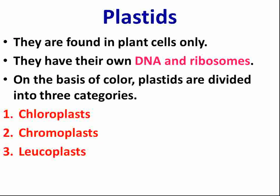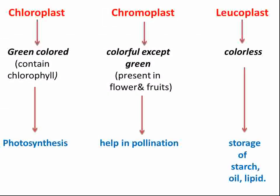Chloroplast means green — these are green-colored plastids. They are green because they contain a pigment called chlorophyll, which helps in the process of photosynthesis. So chloroplasts are green-colored plastids that help in the photosynthesis process.